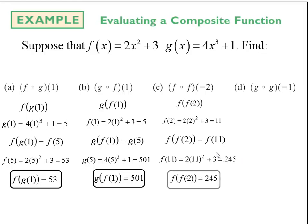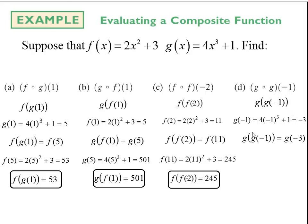So f composed with f at negative 2 is 245. For the last one, we find g composed with g at negative 1. The inner g operates on negative 1 first — plugging negative 1 into g gives negative 3. Then we plug negative 3 into the outer g function and get negative 107. So g composed with g at negative 1 is negative 107.